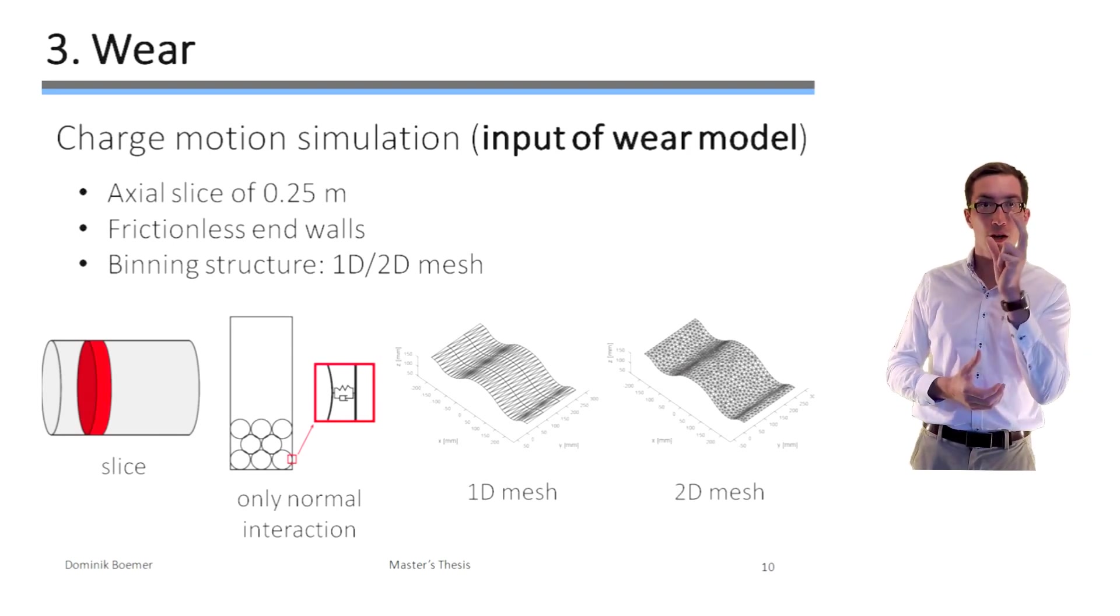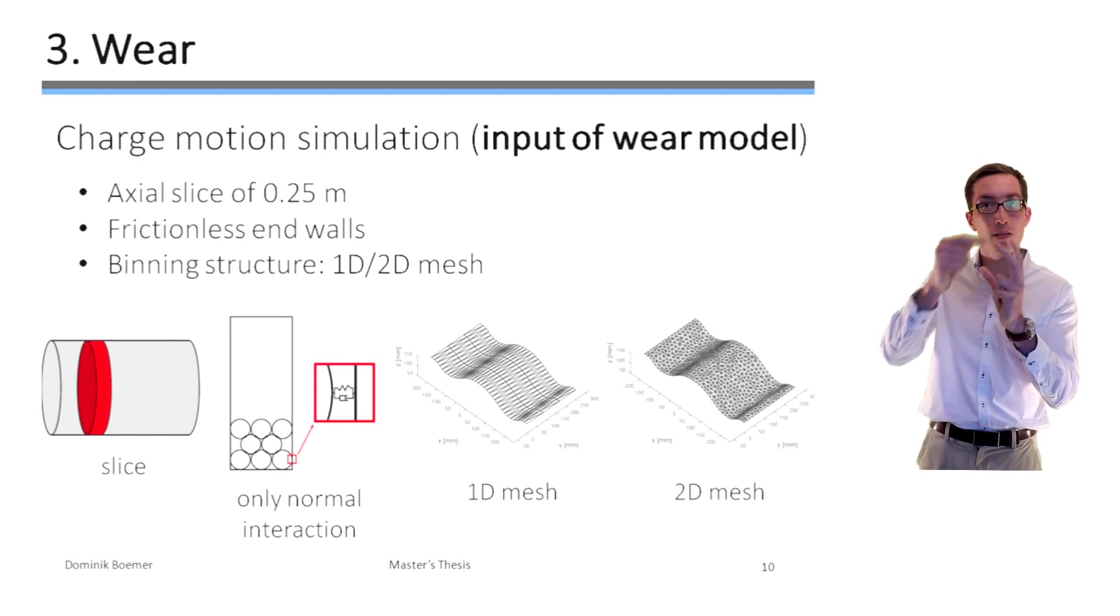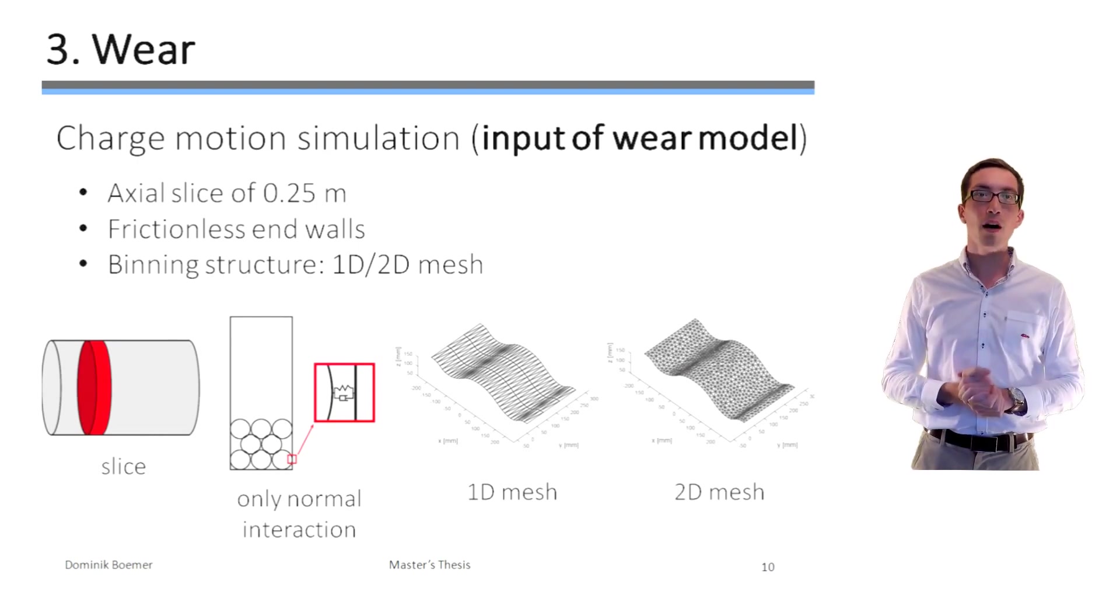Finally, the wear data has to be accumulated on a binning structure. So in simple words, each facet has to know which is its wear level. Therefore, I considered two different binning structures which I call a coarse 1D mesh and a fine 2D mesh.